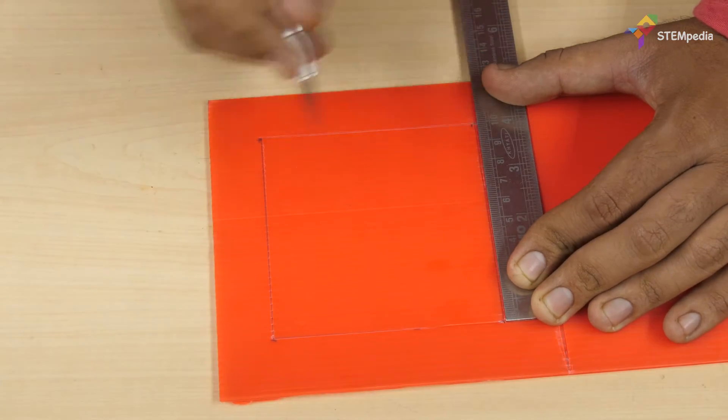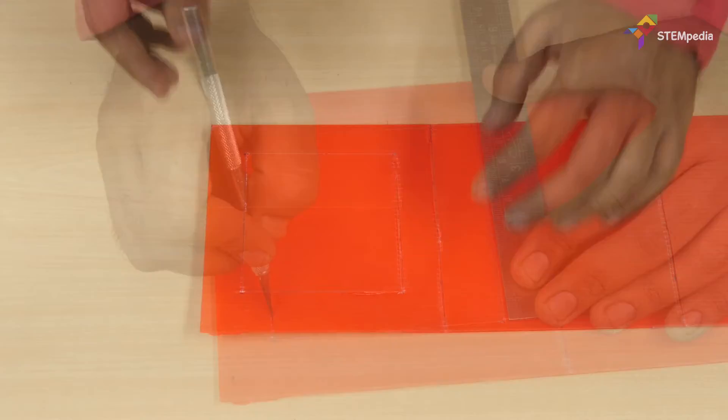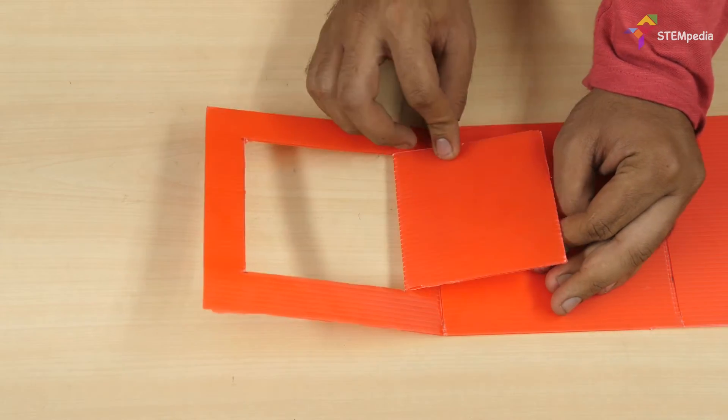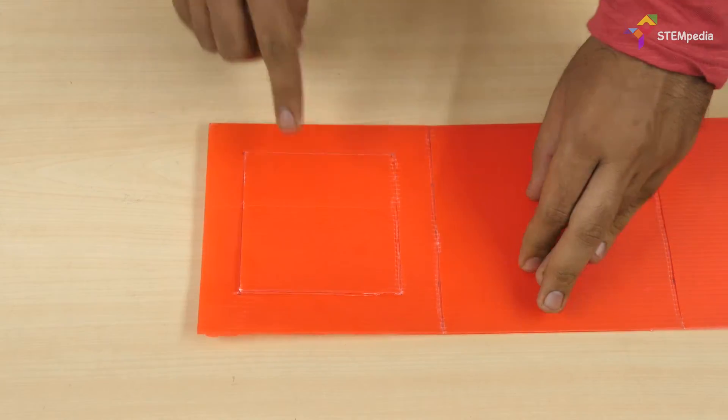And at the back of the fourth side, make a small cut only through the first layer of the sheet. This will create a hinge structure that will make the opening and closing of the door smooth.